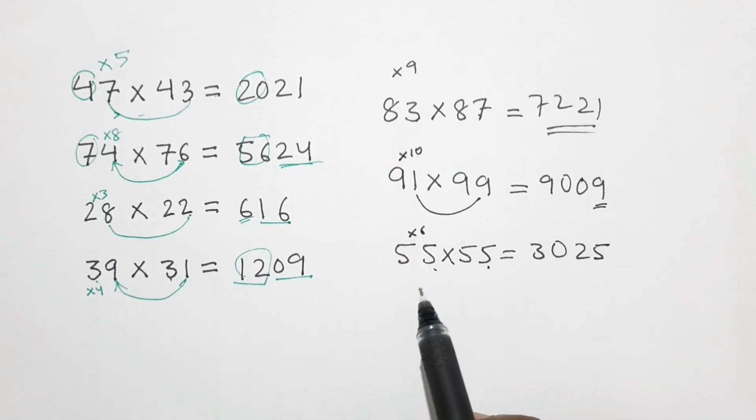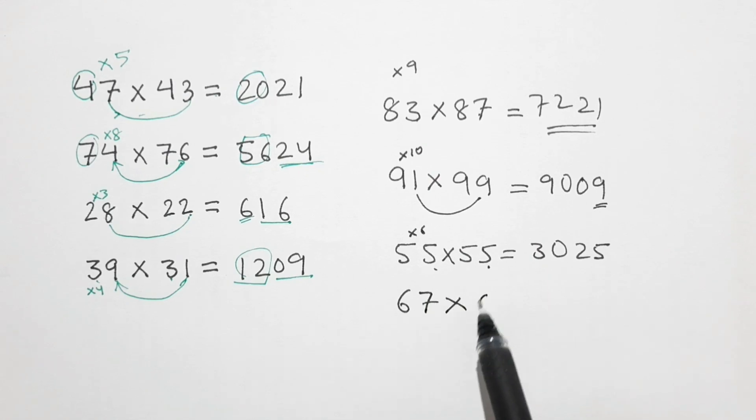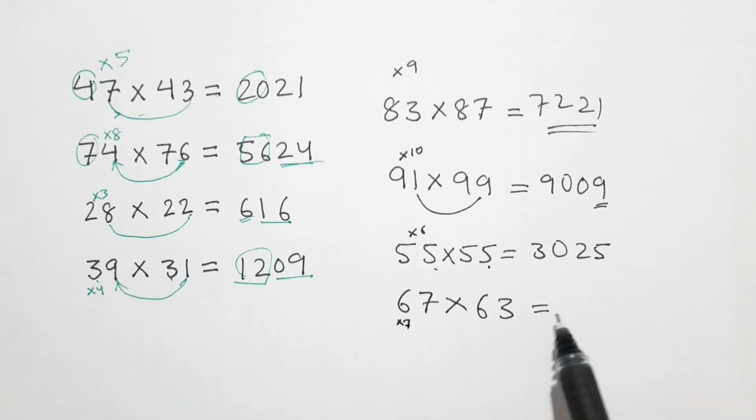One more example. I will take one more example, that is 67 into 63. Here also same thing, 6 into 7, 6 times 7 is 42, and 7 into 3 is 21.